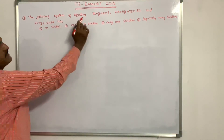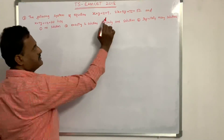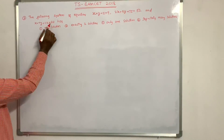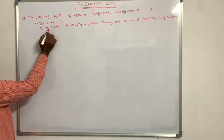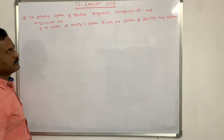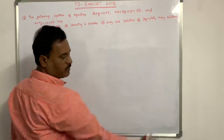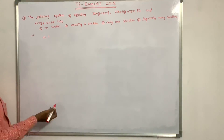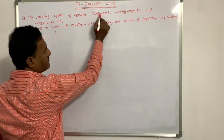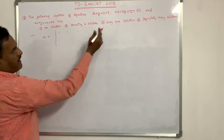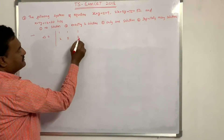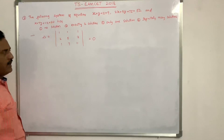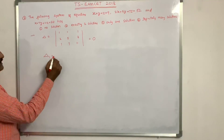Second question: the following system of equations — x plus y plus z equals 9, 2x plus 5y plus 7z equals 52, and x plus 7y plus 11z equals 77. Options: no solution, exactly two solutions, only one solution, or infinitely many solutions. First we find the value of delta using Cramer's method. The coefficient matrix for x, y, z gives delta equal to 0.